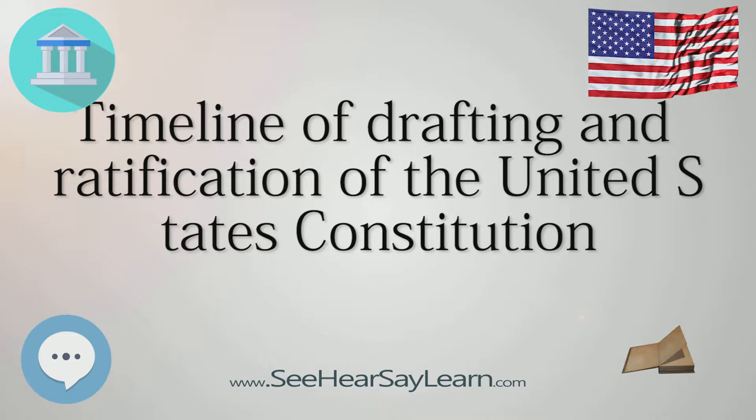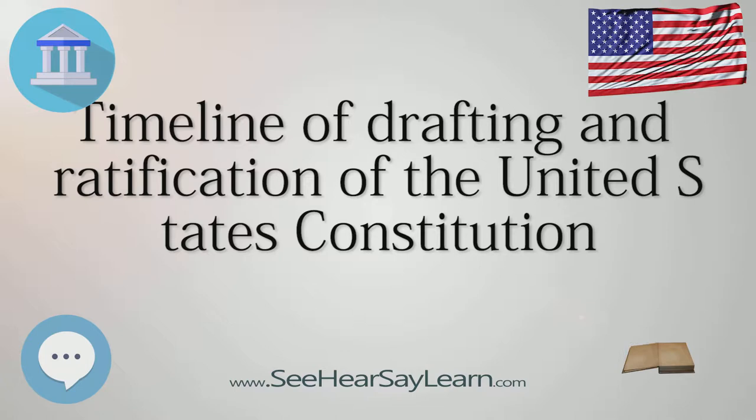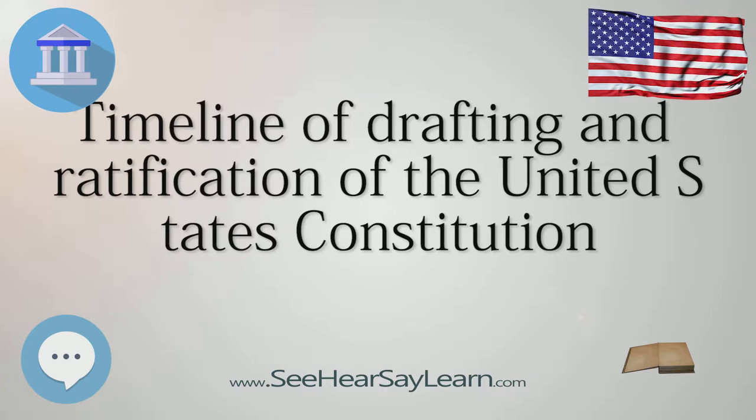August 25: A Committee of Eleven composed of Pierce Butler, Daniel Carroll, Jonathan Dayton, William Few, Thomas Fitzsimmons, Nathaniel Gorham, John Langdon, George Mason, George Read, Roger Sherman, and Hugh Williamson is selected to consider issues related to interstate trade and navigation.